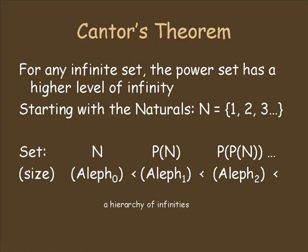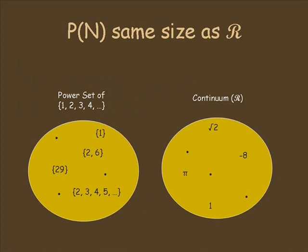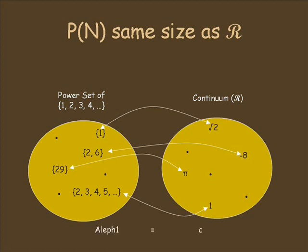This gives us an infinity of infinities. But where does the continuum fit in here? We already know it's bigger than aleph naught. Cantor showed that the continuum is the same size as the power set of the counting numbers. If you prefer pictures, consider these two sets. On the left, we have the set of all subsets of the counting numbers, with elements like {1}, the pair {2,6}, and the set containing the counting numbers from 2 on. On the right, we have the continuum. Cantor found a mapping between these two sets that pairs them off exhaustively with nothing left over. This means the two sets are the same size, and that C is the same as aleph 1.